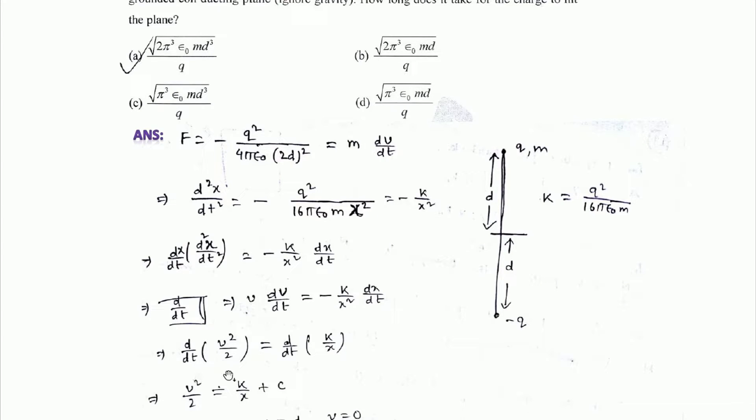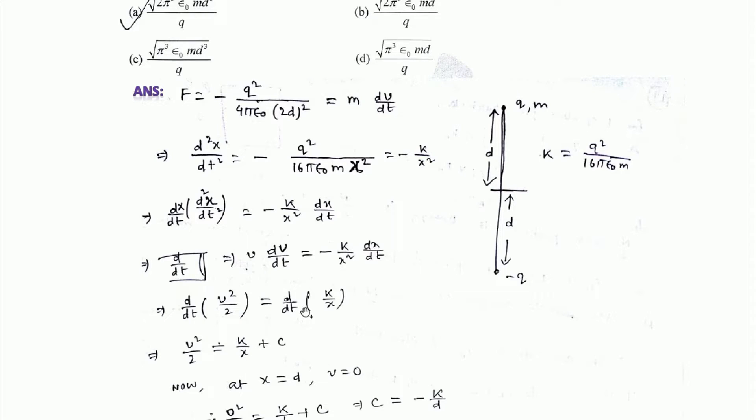v dv/dt can be written as d/dt of v²/2, and this can be written as d/dt of k/x. Integrating both sides we get v²/2 equals k/x plus c, an integration constant.